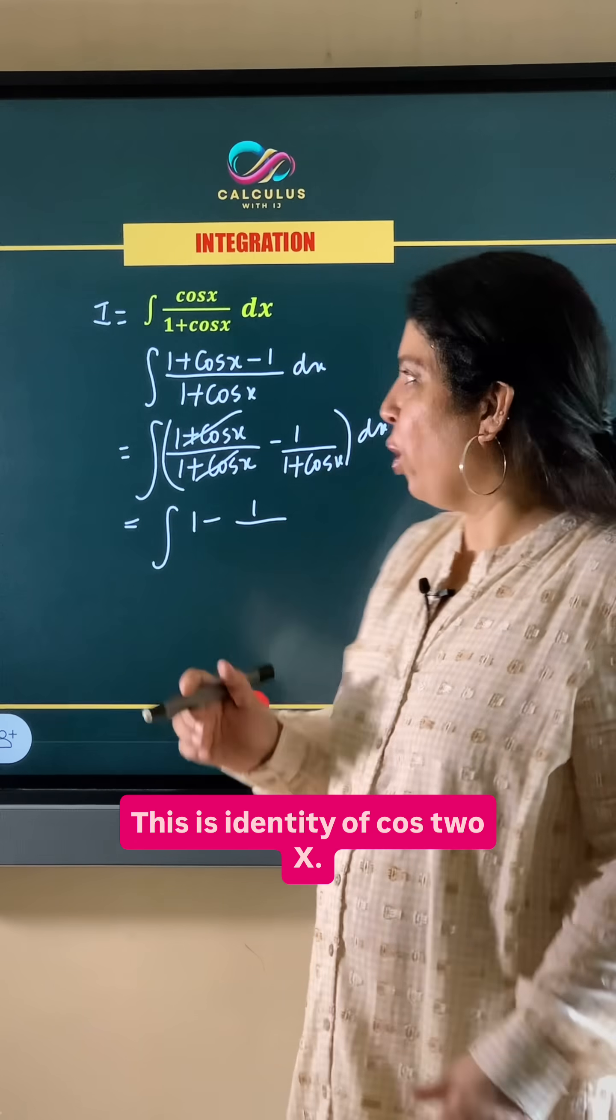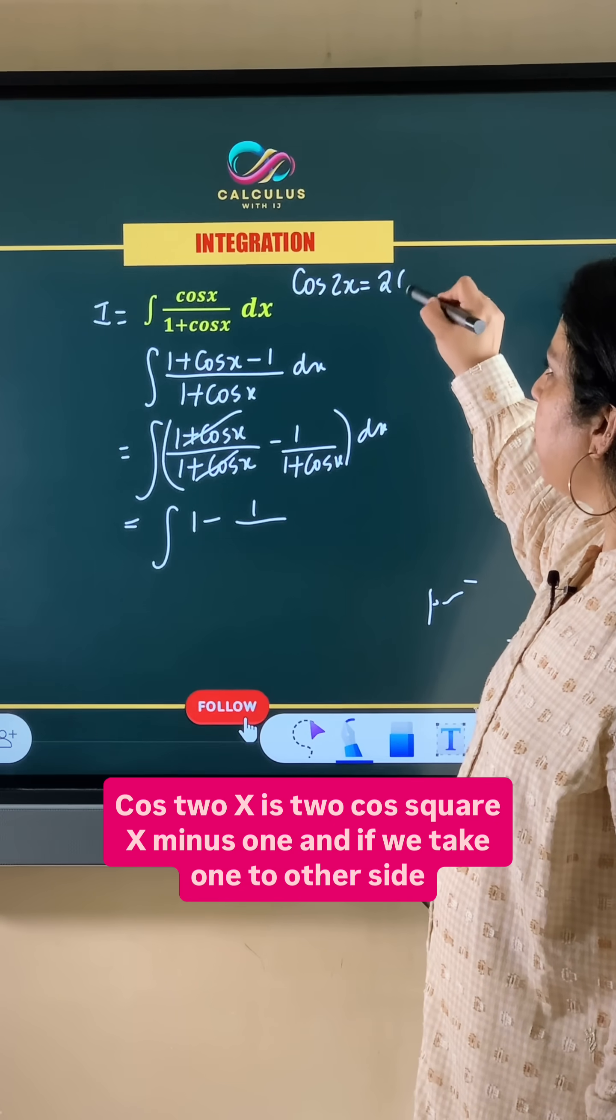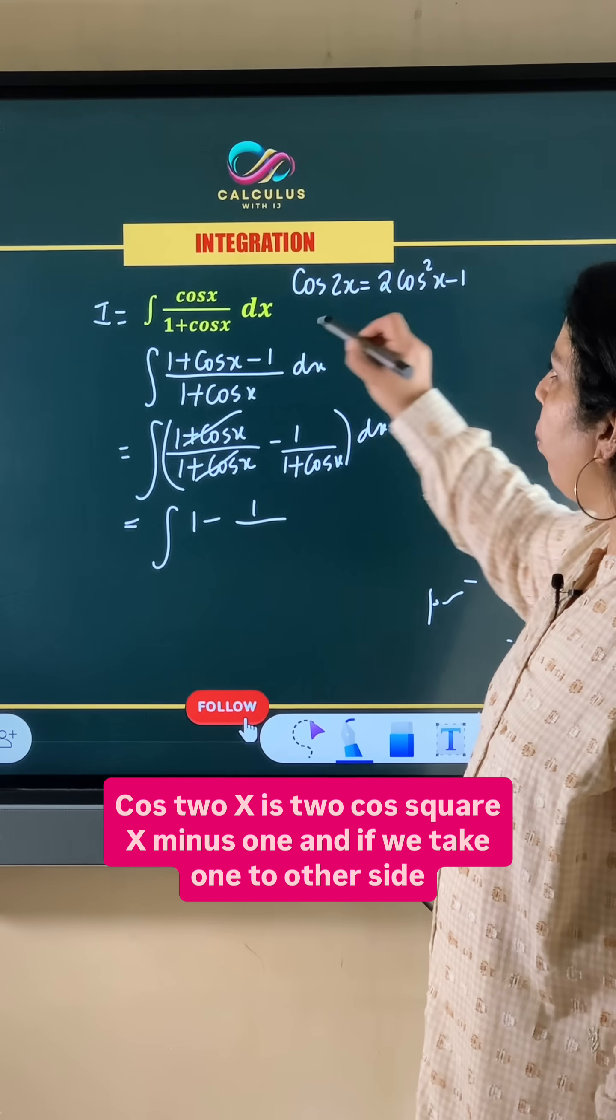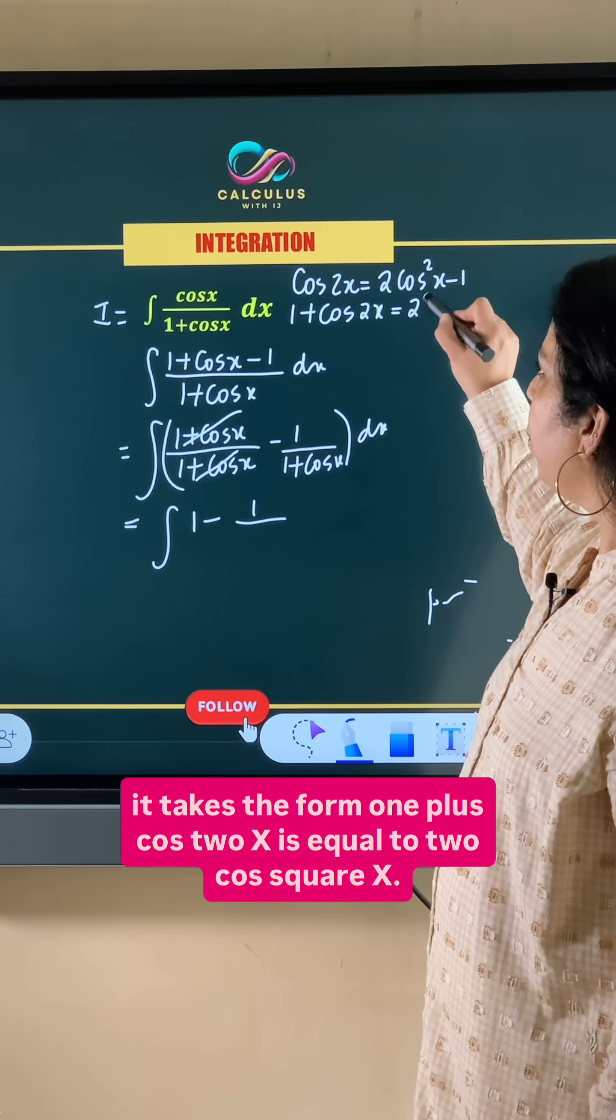This is the identity of cos 2x. So cos 2x is 2 cos square x minus 1 and if we take 1 to the other side it takes the form 1 plus cos 2x is equal to 2 cos square x.